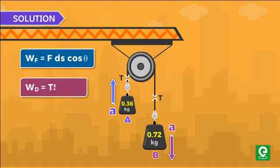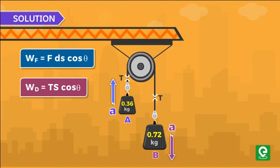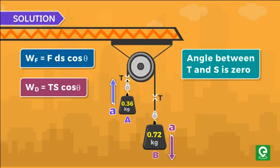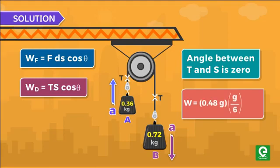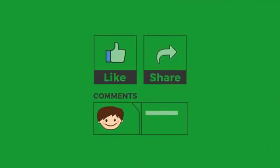Work done by tension is equal to Ts cos theta. Angle between tension and displacement is 0. Putting the values of tension and displacement, we get work done by tension equal to 8 joules.